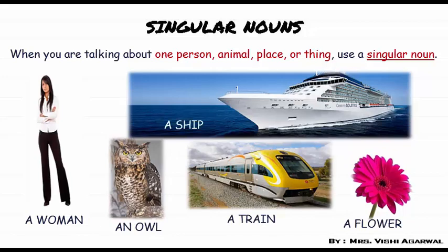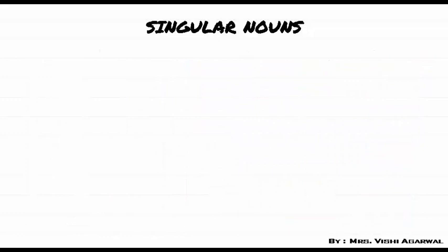Now in these pictures you can see that only one person — a woman — a single animal that is an owl, a train, a thing. Singular things are given. Therefore we have used 'a' and 'an' before these words.